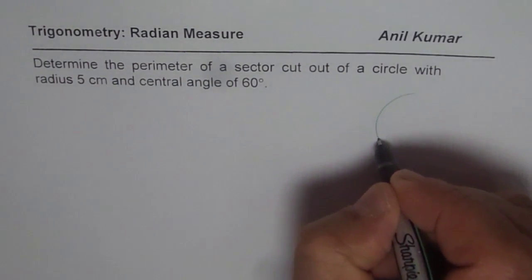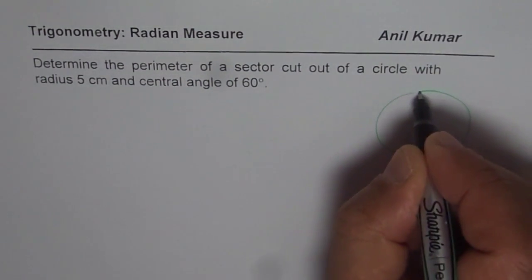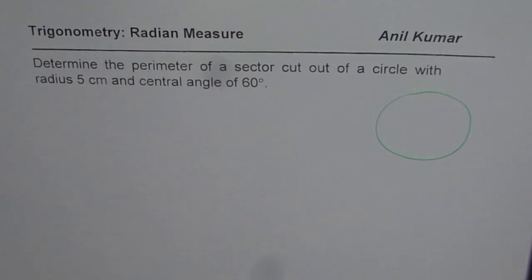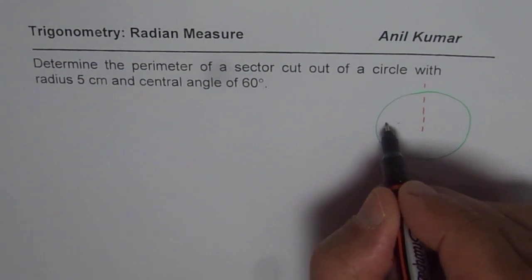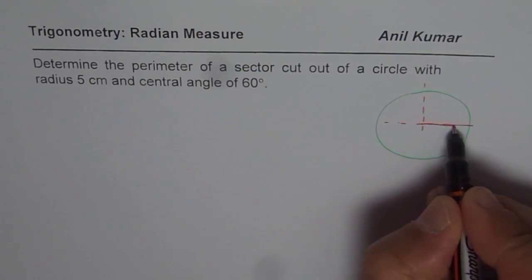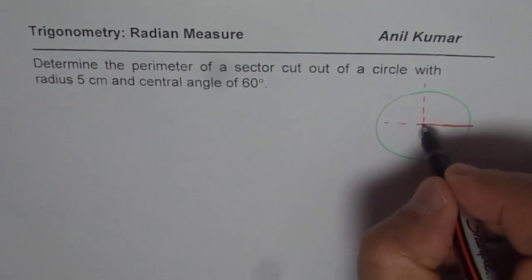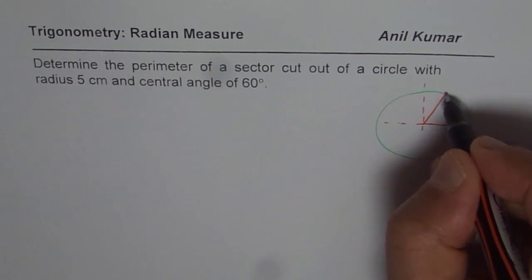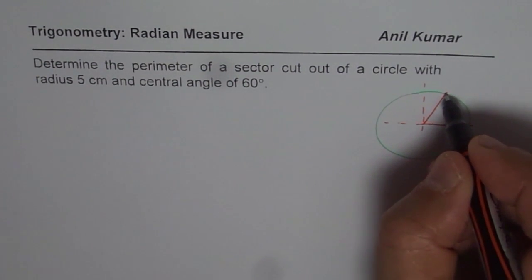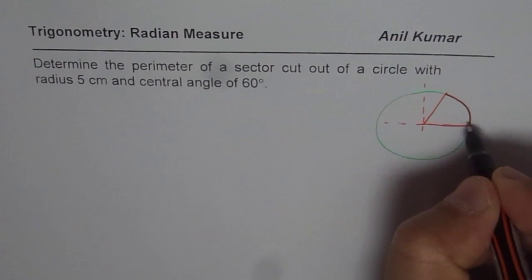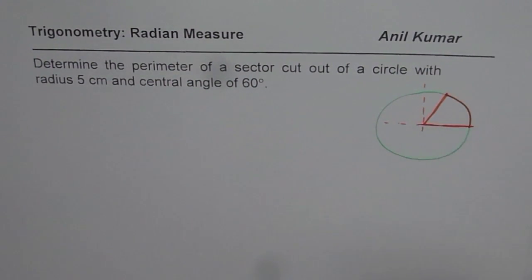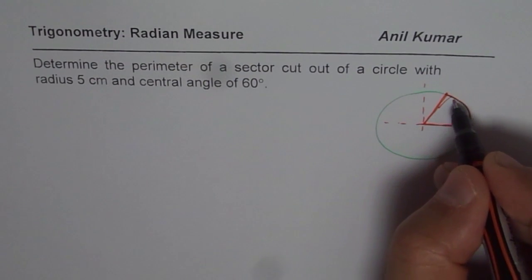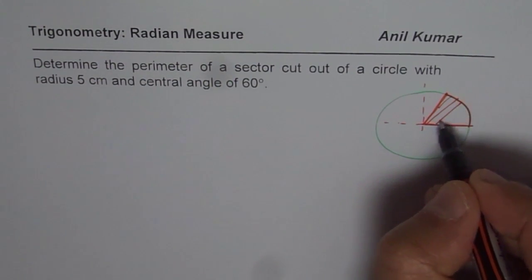So what we are given here is, let us say we have a circle here and from this circle we cut out a sector. So let me just cut out a sector, let us say from here, with 60 degrees angle in the center. So we cut this portion out of this circle. That is called the sector, the portion which has been removed like this.